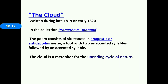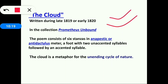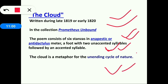The Cloud was written in late 1819 or early 1820. The poem is included in the collection Prometheus Unbound. It consists of six stanzas in anapestic or anti-dactylus meter — a foot with two unaccented syllables followed by an accented syllable. This structure was asked in a UGC examination. The Cloud is a metaphor for the unending cycle of nature.